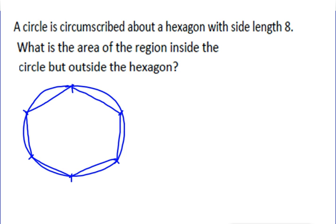So this asks what's the region inside the circle but outside the hexagon? Basically it wants to know what are these 6 regions combined.